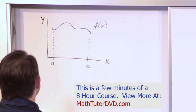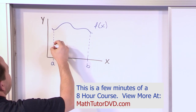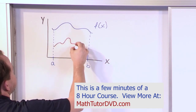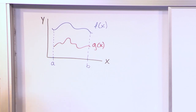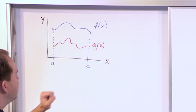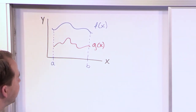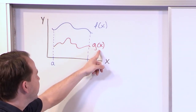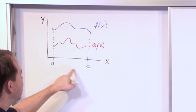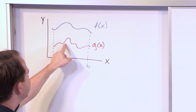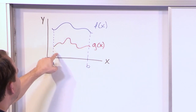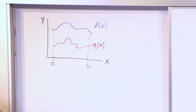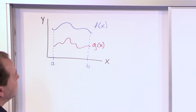Now, what if I gave you another curve and said, here's g of x. G of x looks different. And I said, how do you find the area under the g of x curve to the x-axis between a and b? And you would say, well that's easy — I just integrate g of x between a and b as my limits of integration. And that's going to give me the surface area all the way from this graph all the way down to the x-axis. So we know how to find the areas under these curves.